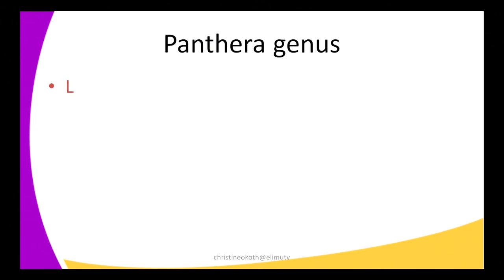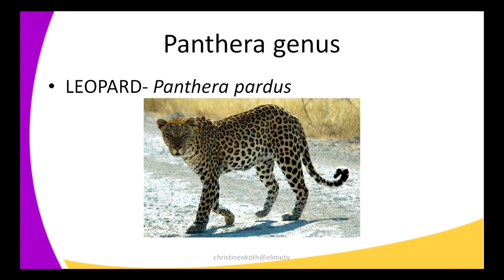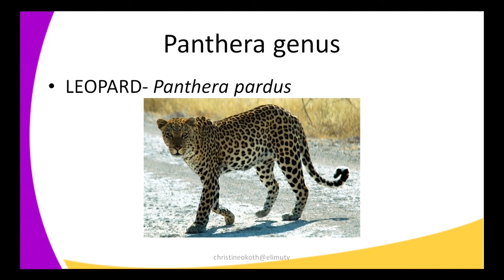The next member of the Panthera genus is the leopard, scientifically called Panthera pardus. They are the smallest of the big cats. They have a long body, short legs, and powerful jaws. They look similar to jaguars but are a bit smaller and lighter. The patterns in their fur — rosettes, that is the circular markings — are smaller and more closely packed. They are excellent tree climbers, run very fast, and hunt and eat different animals.